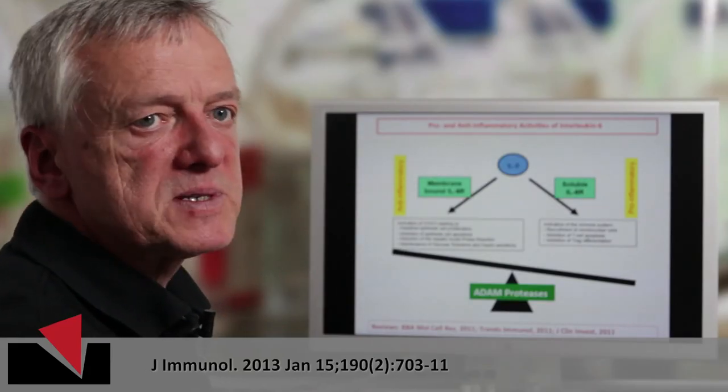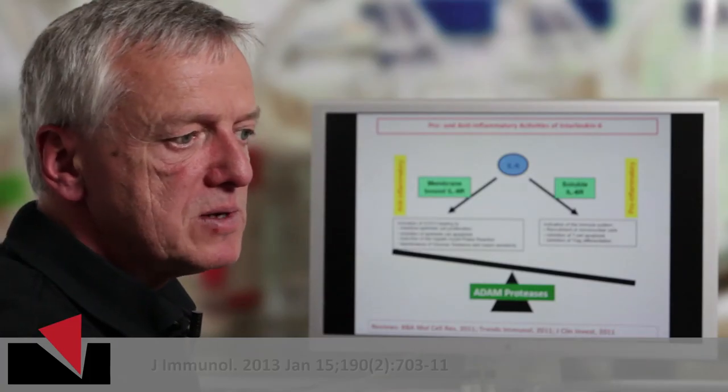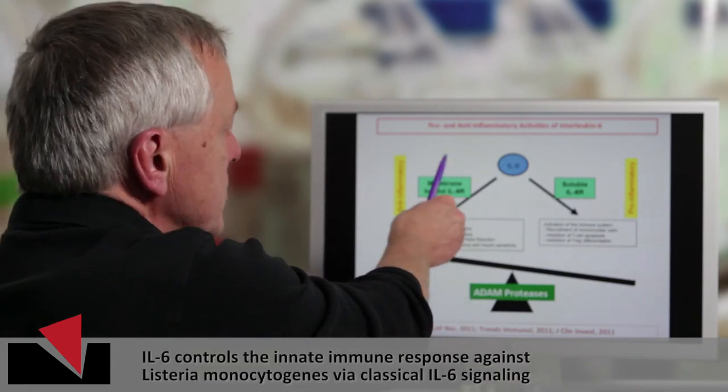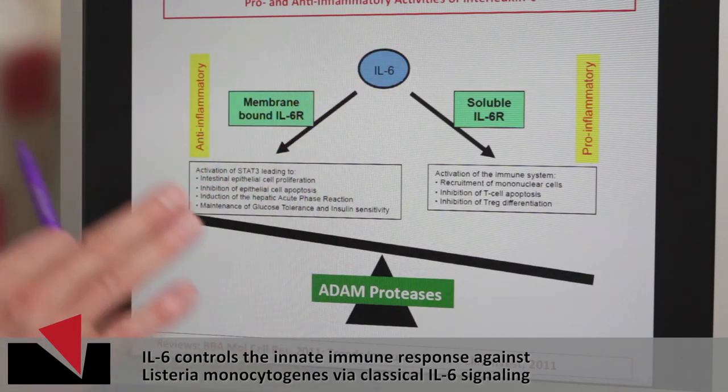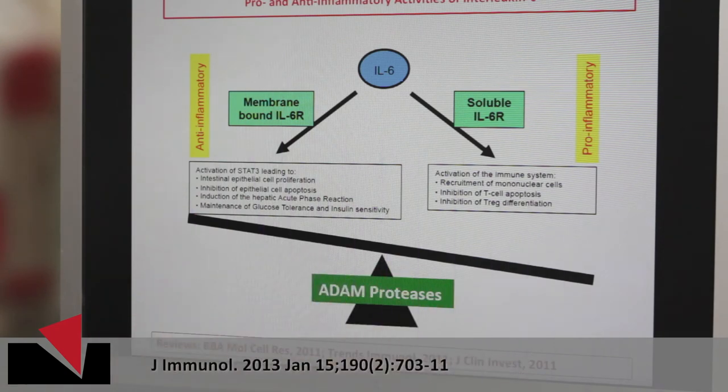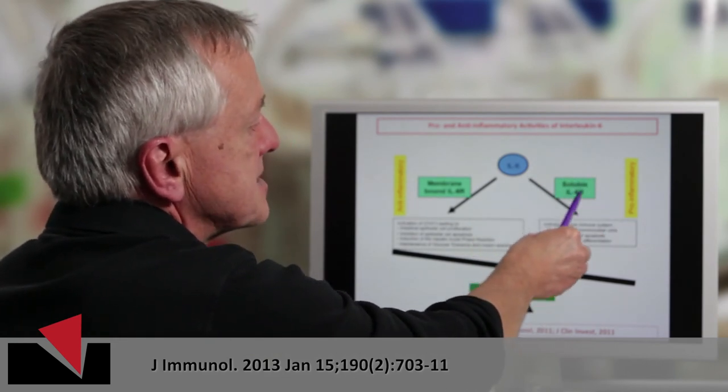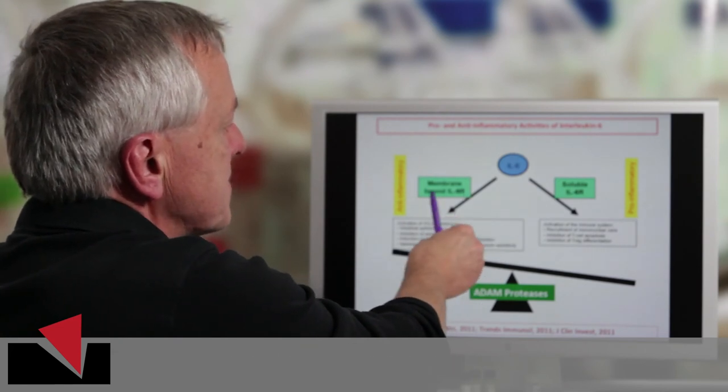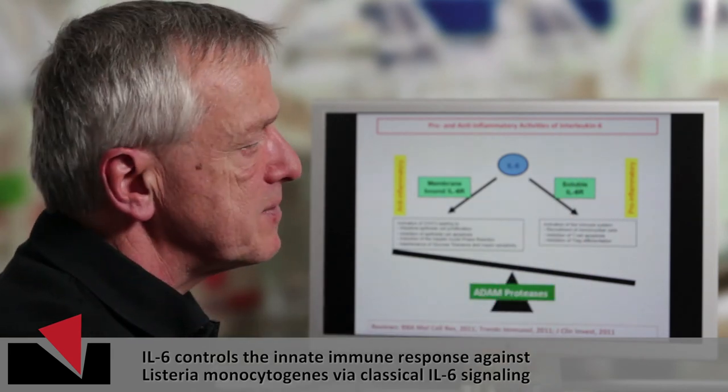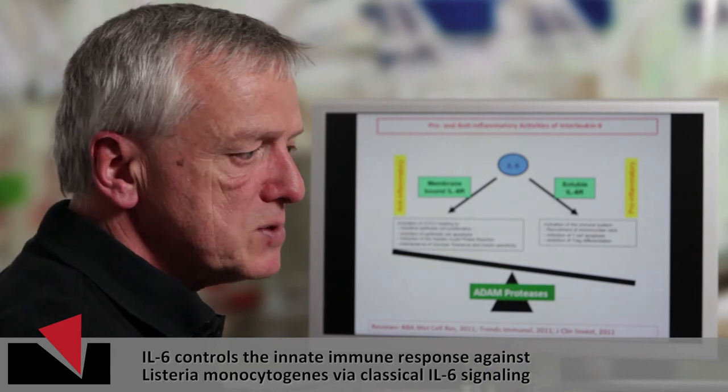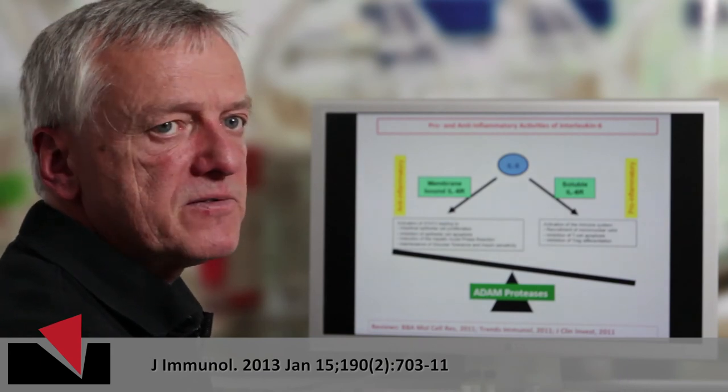What we have learned from this work is that the two ways of interleukin-6 acting via the membrane-bound or the soluble receptor can actually be defined as being regenerative and protective for the membrane-bound IL-6 receptor and pro-inflammatory for the soluble interleukin-6 receptor. And therefore, it is beneficial to selectively block this arm of the IL-6 activity without compromising the response of the cells via the membrane-bound receptor. And this protein which we have generated, the soluble GP130-FC, we have produced in large amounts under GMP conditions and this protein has now entered clinical phase 1 trials.